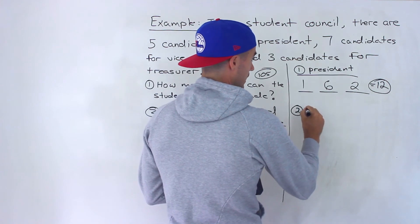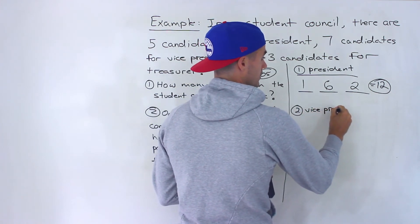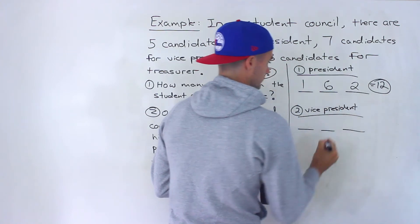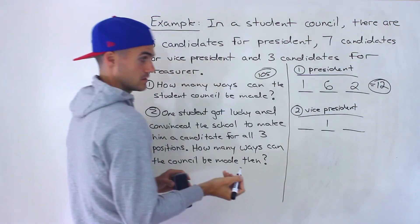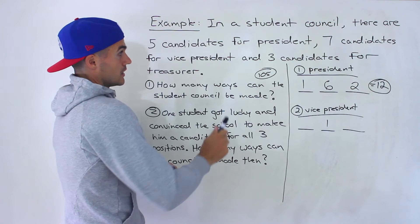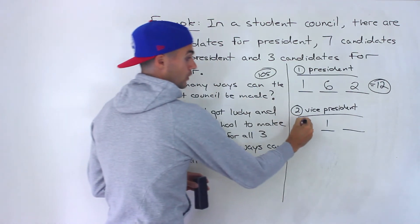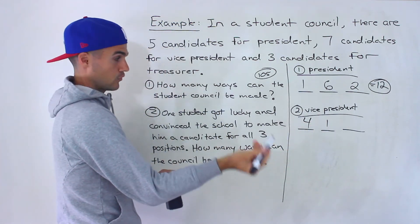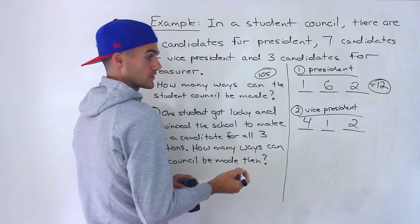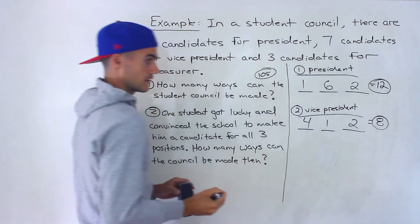Case two: the lucky student becomes vice president. The VP position is spoken for, so that's one. Since they were also a candidate for president, there are four candidates left for president. And there are two candidates left for treasurer. So four times one times two gives us eight.